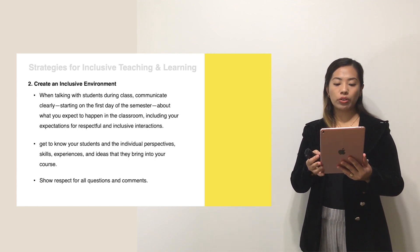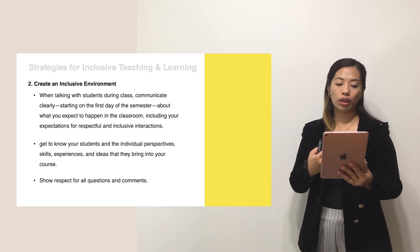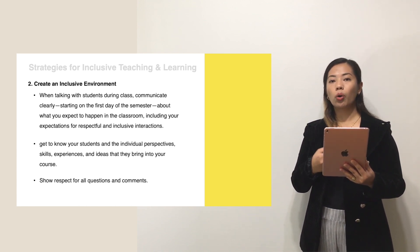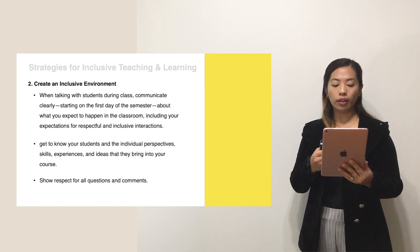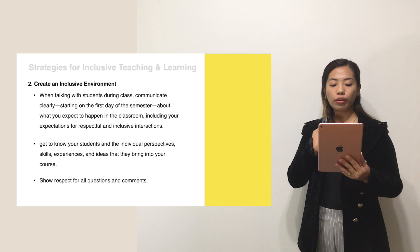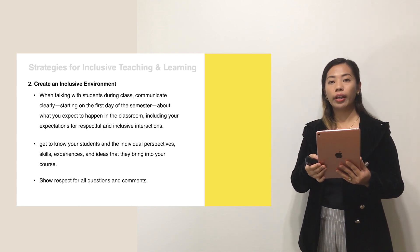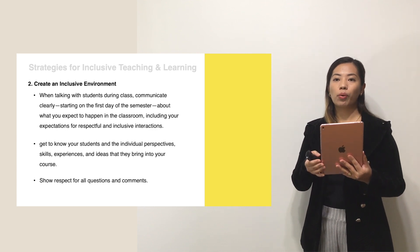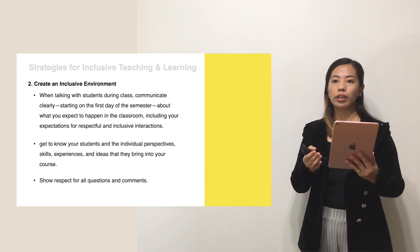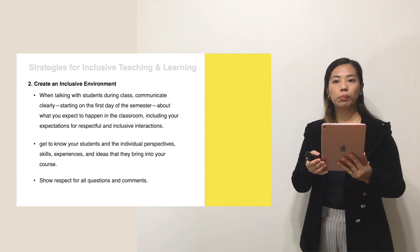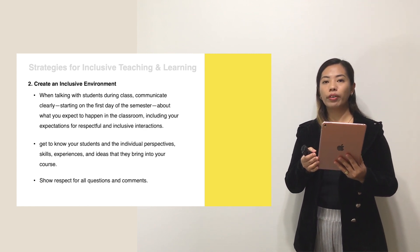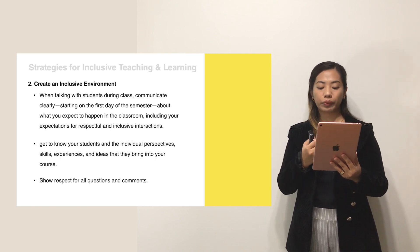Another strategy is to create an inclusive environment. When talking with students, communicate clearly. On the first day of class, tell students the expectations for what could happen in the classroom, including your own expectations as a teacher, in order to foster respectful and inclusive interaction. Set and enforce ground rules at the beginning — guidelines for contributing ideas and questions, and for responding respectfully to the ideas and questions of other learners.